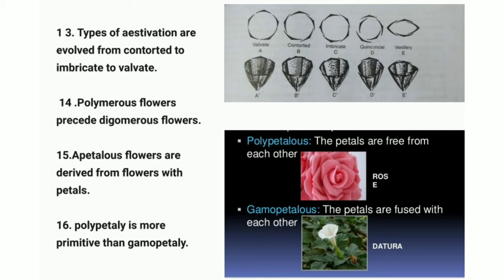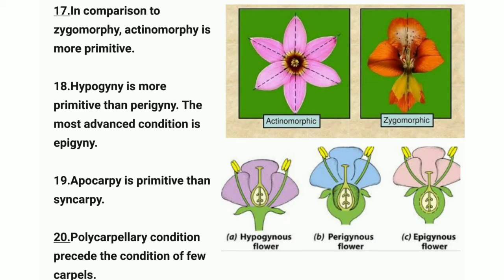Point sixteen: polypetaly is more primitive than gamopetaly. In polypetaly, petals are free from each other — for example, the rose. In gamopetaly, petals are fully or partially fused with each other — for example, the datura flower, as seen in the image.